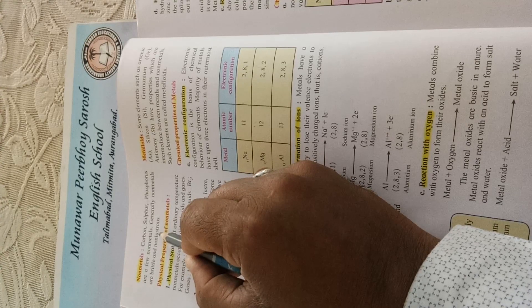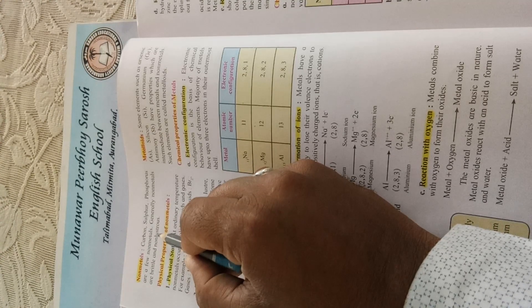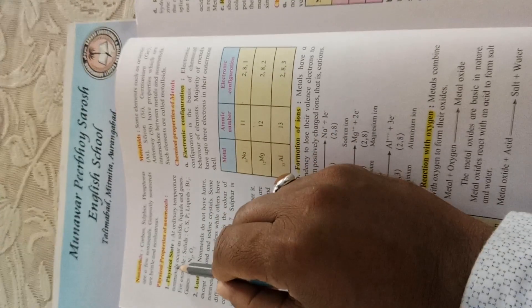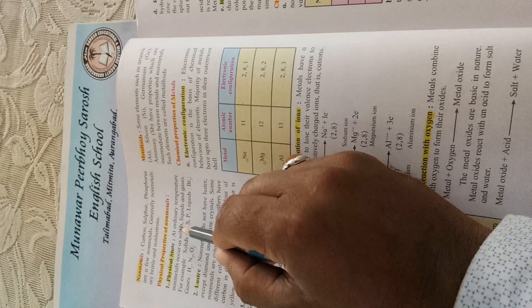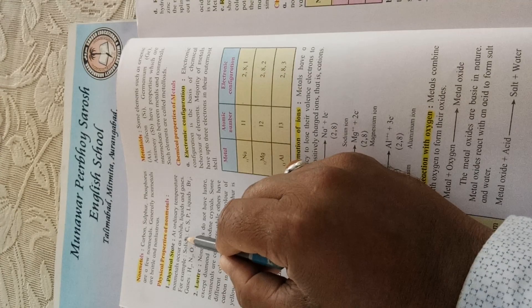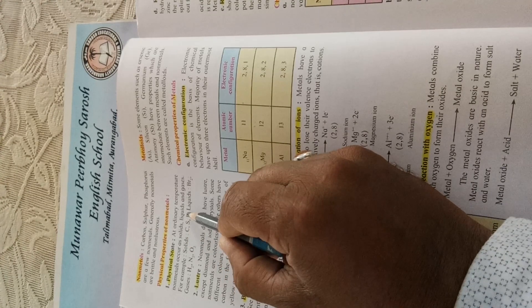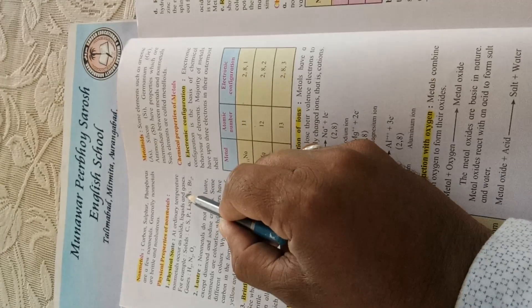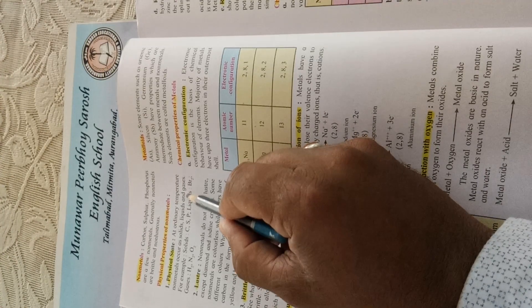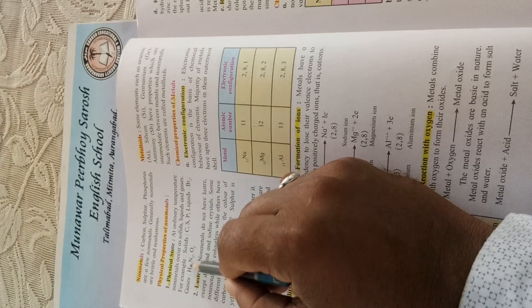Now, physical properties of nonmetals. The first property is physical state. At ordinary temperature, nonmetals occur as solids, liquids, and gases. This means nonmetals can be found in all three states at normal temperature. For example, solids...